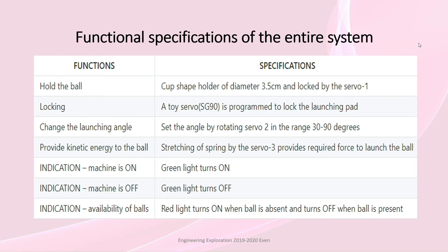Indication. Machine is on: Green light turns on. Machine is off: Green light turns off. Indication availability of balls: Red light turns on when ball is absent and turns off when ball is present.